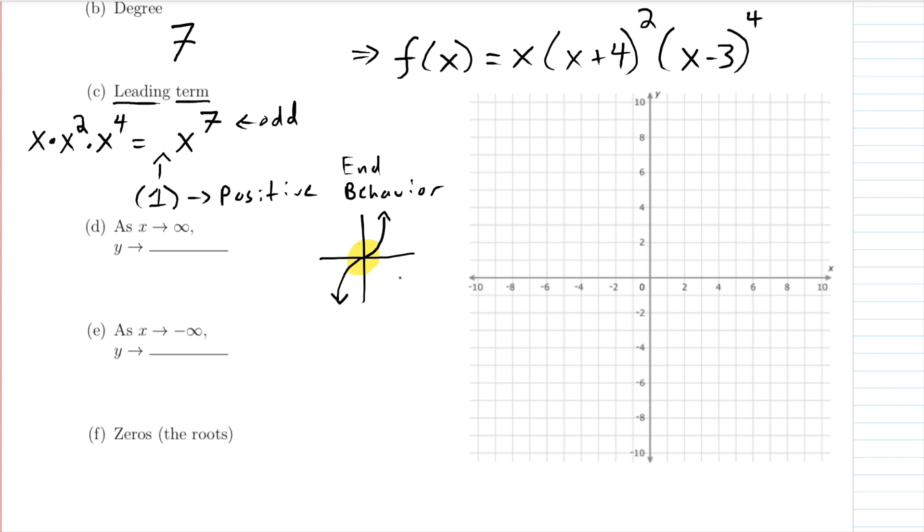So as x gets really, really big, so that means we're thinking about x getting bigger. What does y do? Well, look at the function. The function is increasing as x gets big. Y is going up, and y is going up without limit. It keeps going up forever. So as x approaches infinity, y approaches infinity as well.